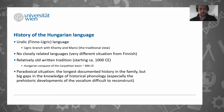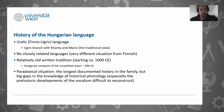Some general remarks about the history of Hungarian: this is a Finno-Ugric language. Finno-Ugric and Uralic can be used as synonyms - it's a long story, but essentially they mean the same thing. And Hungarian doesn't have closely related languages.